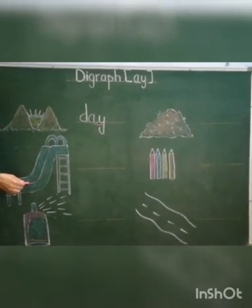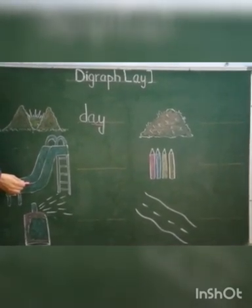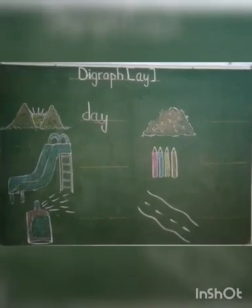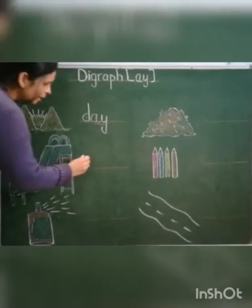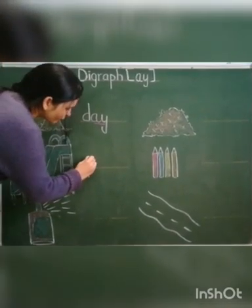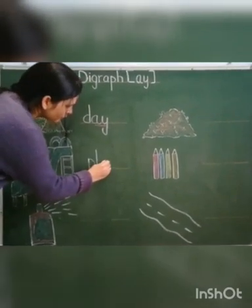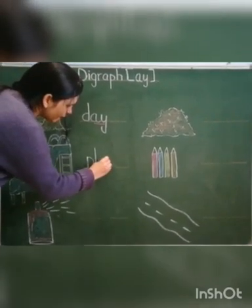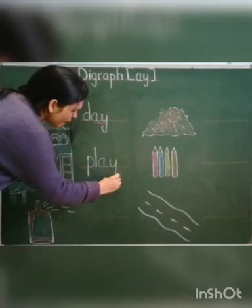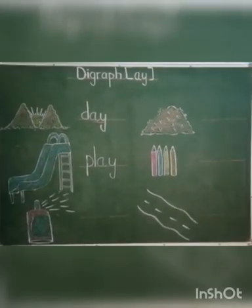And kids, which picture is this? Yes, you play on the slide. And how do we write play? P, L, A, Y. Play.